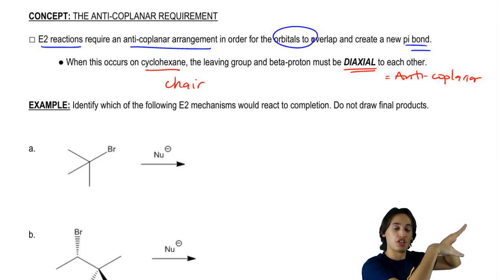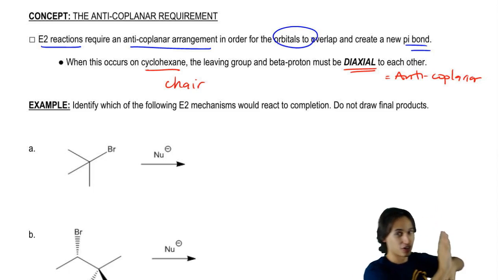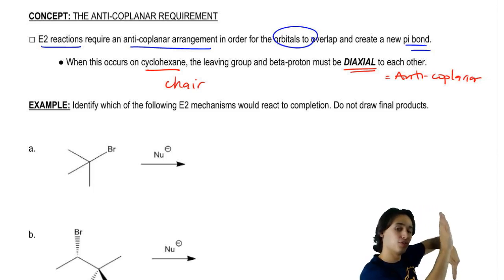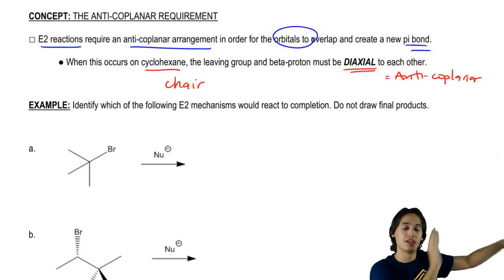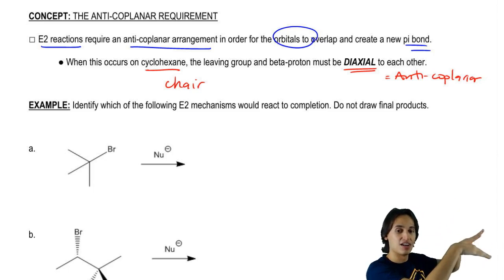In order for the elimination to occur, you're going to need to rotate a chair to the axial position first, even though that's the less stable position. Even though this is less stable, I need to rotate it like this in order to make my reaction happen because I need my groups to be anti, not gauche.